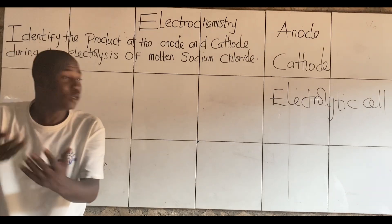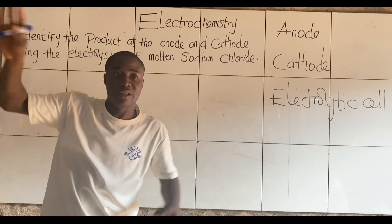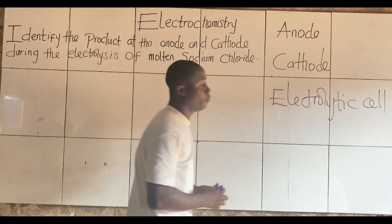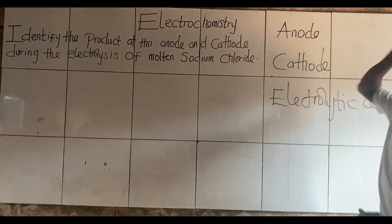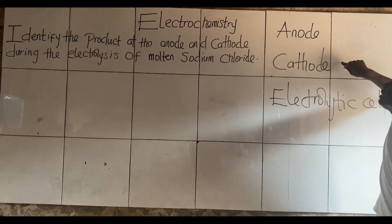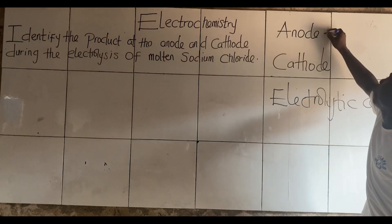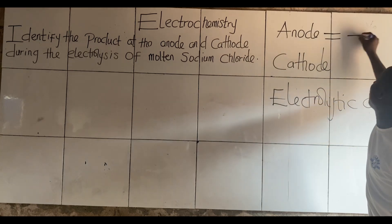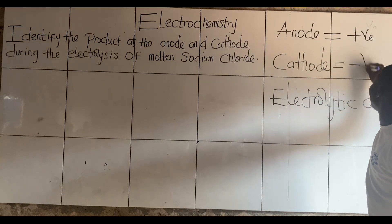Did I tell you guys it's the electrochemical cell? No. But I explained the differences between both cells. So, in an electrolytic cell, we have to know the sign for anode and cathode. What is your anode for an electrolytic cell? Positive. What about the cathode? Negative.